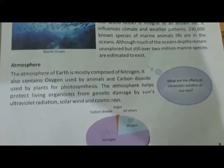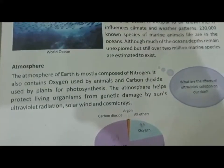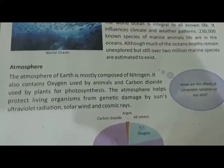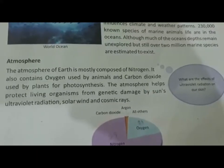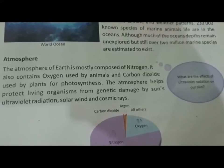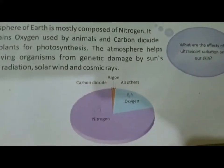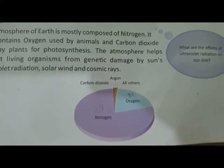Now let me tell you something about the atmosphere. The Earth's atmosphere is composed of nitrogen and contains oxygen which we use and carbon dioxide. The atmosphere helps living organisms to live and protects them from the sun's ultraviolet radiation, solar wind, and cosmic rays. In the diagram, you can see that the atmosphere contains a large proportion of nitrogen, a significant amount of oxygen, and the rest is other gases.